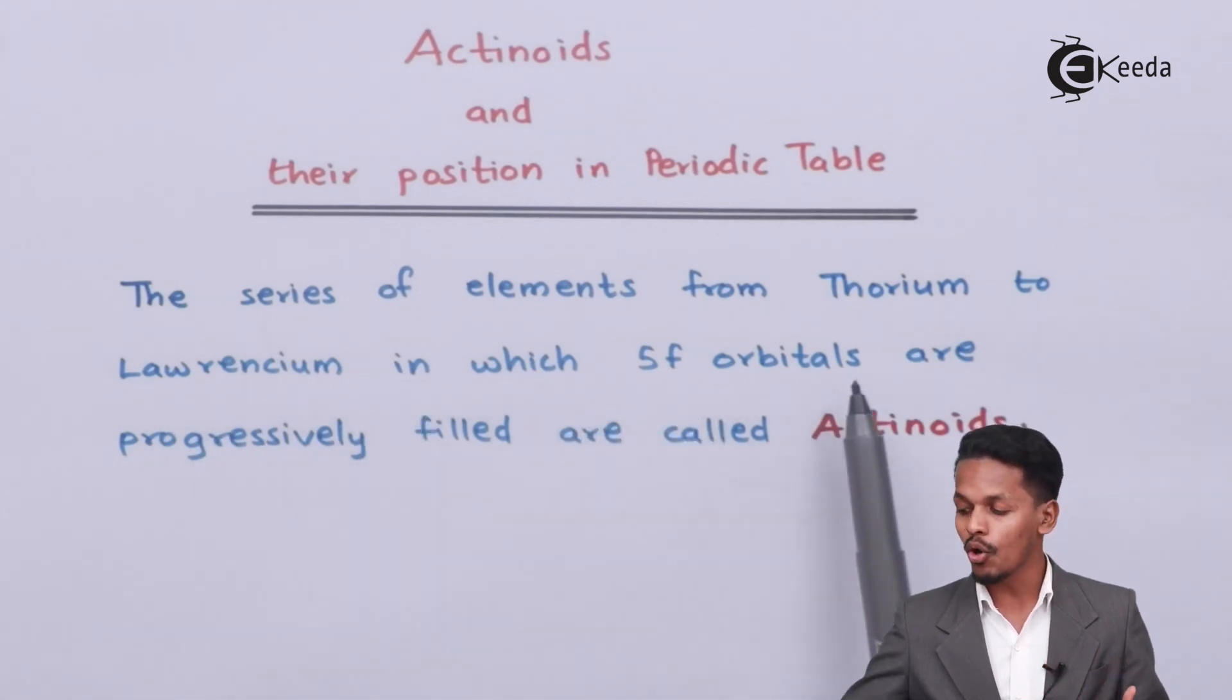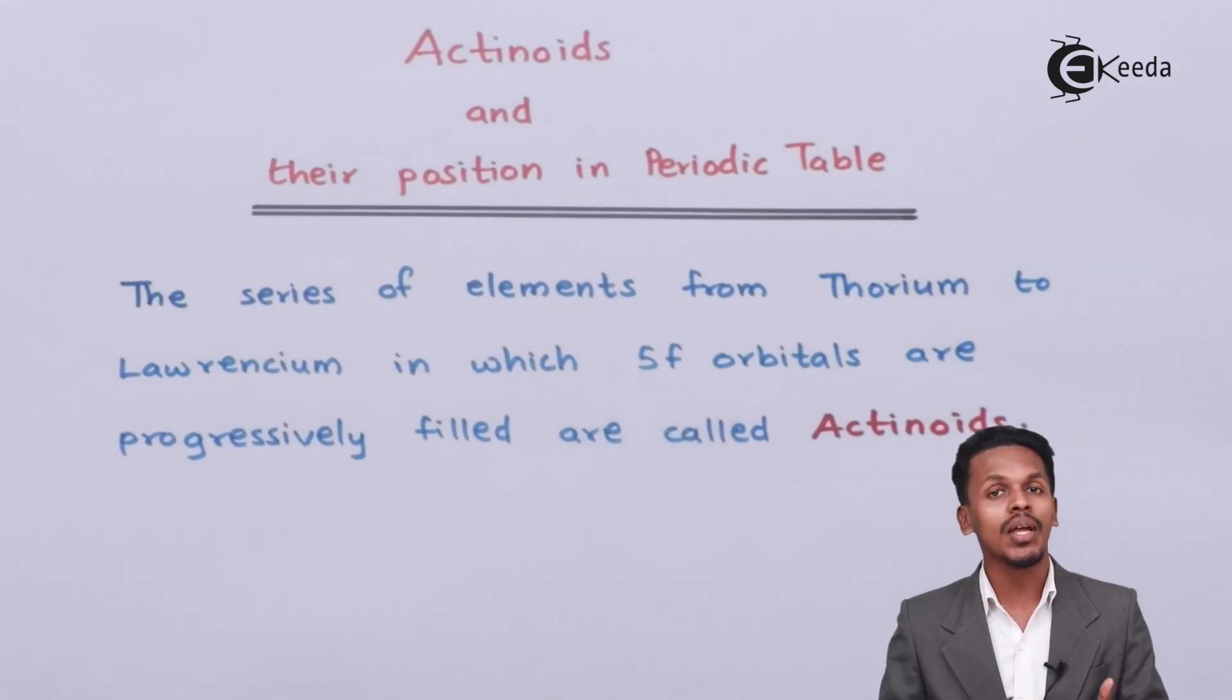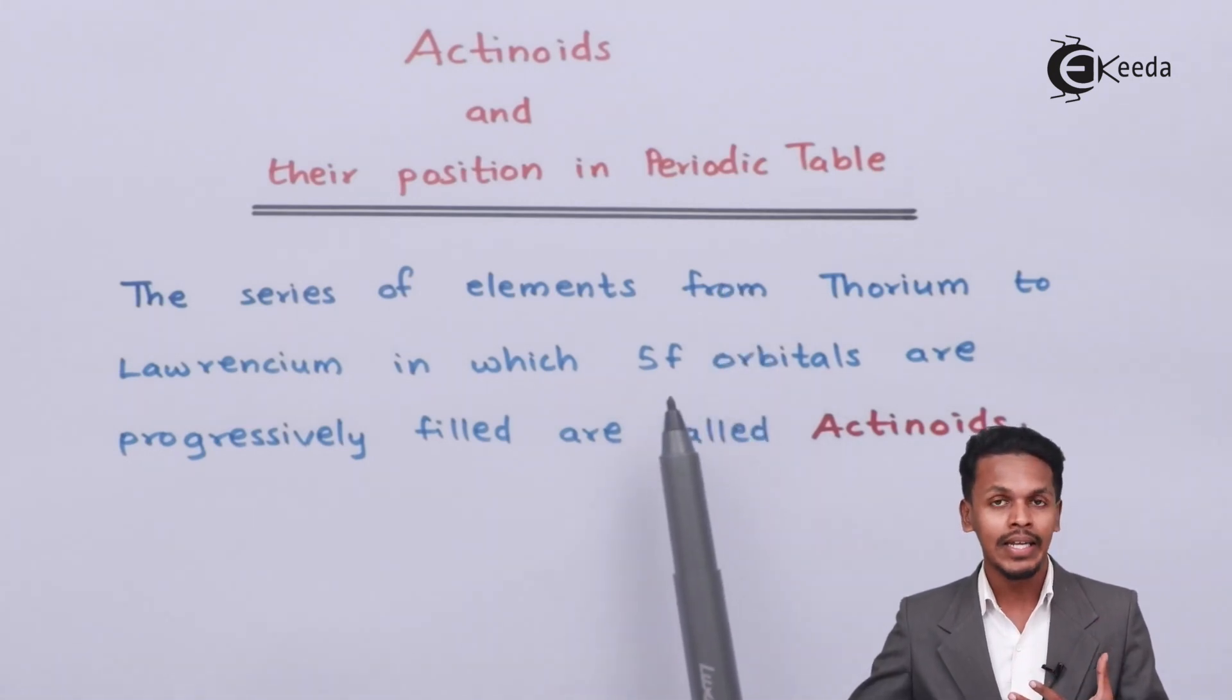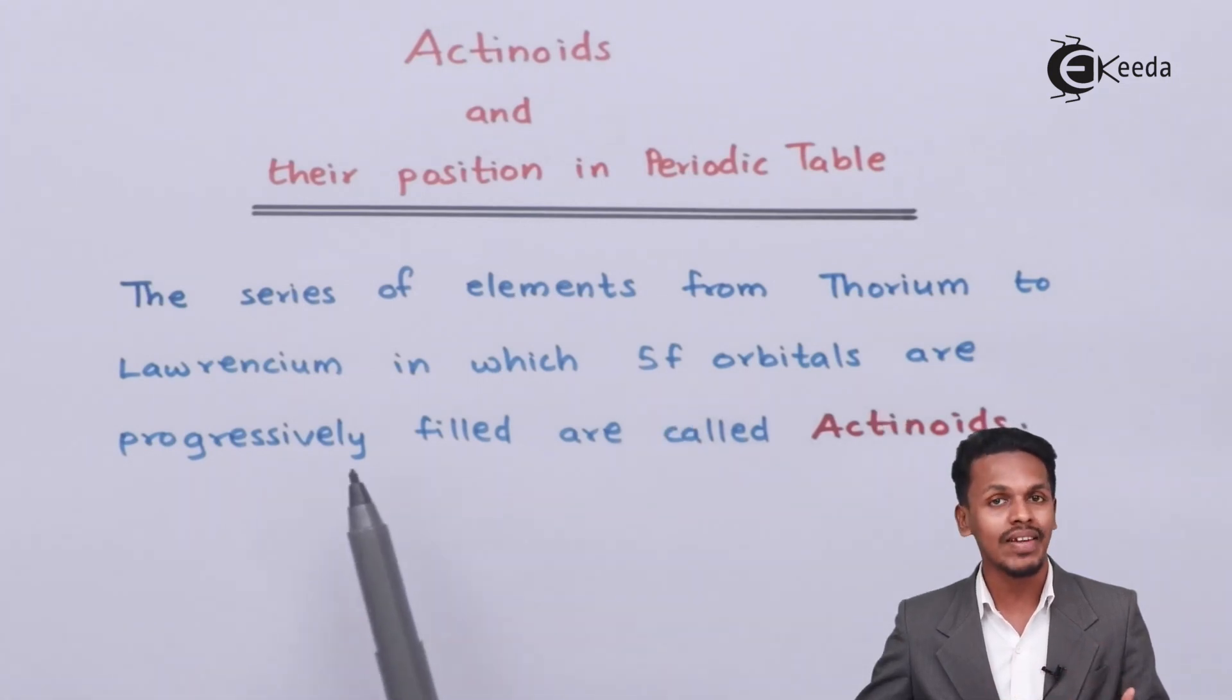In the case of lanthanoids, electrons are filled in the 4f orbital, but here electrons are filled in the 5f orbital progressively. That's the reason they are known as actinoids - because they are elements that follow actinium.